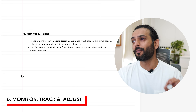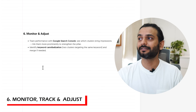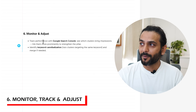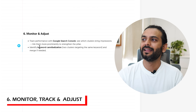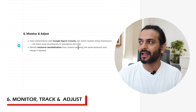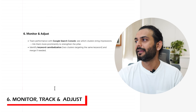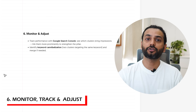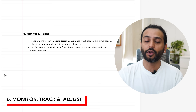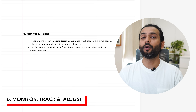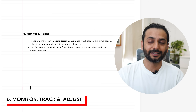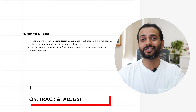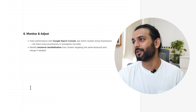Sixth, monitor and adjust. It's really important that you track results and adjust your strategy. Use Google Search Console to see which cluster articles bring impressions, then link to them more prominently to strengthen the pillar. Also identify keyword cannibalization — where two cluster articles are targeting the same keyword — and merge them if needed. Topic authority can be dangerous if not done properly, because people sometimes write a lot of content on the same topic without a strategy, which causes keyword cannibalization. Monitor everything and adjust. There are relevant videos on the channel in the description.